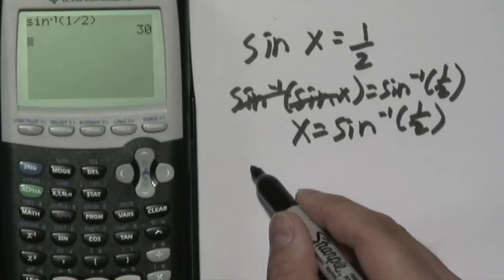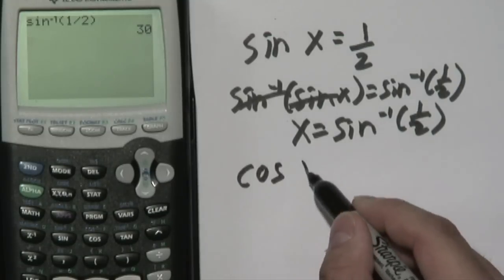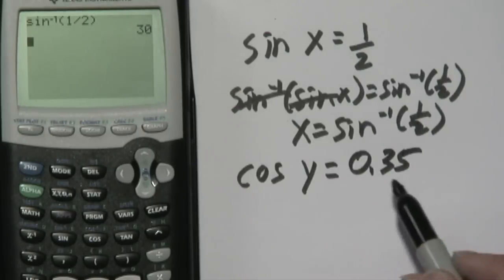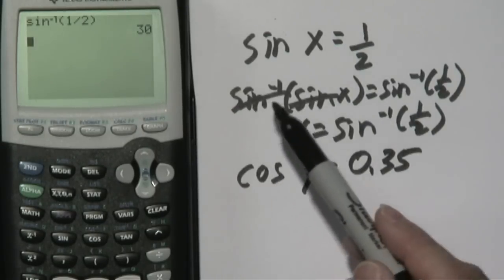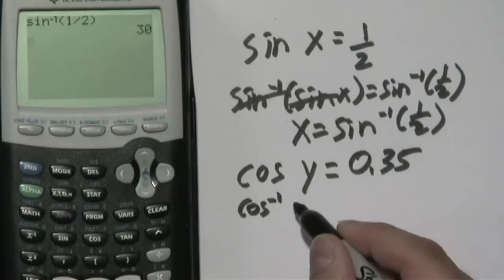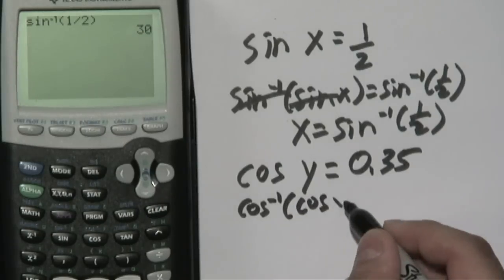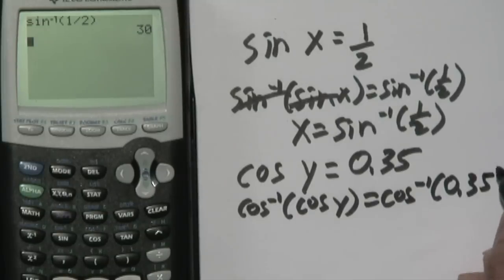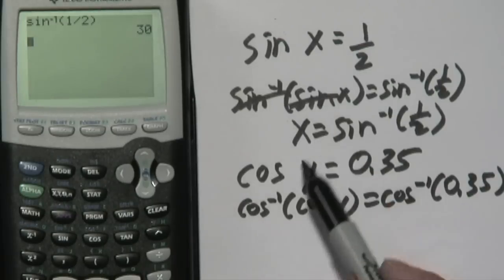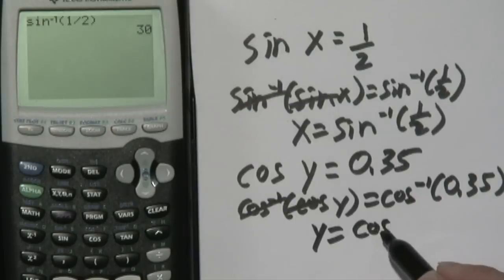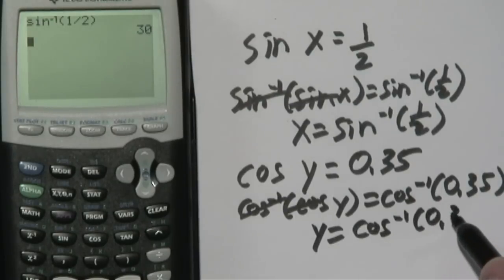Now suppose you want to find out cosine of what degree, let's call this y, is equal to let's just say 0.35. Now you notice we applied sine inverse on both sides so we're going to apply cosine inverse on both sides. Now just like before, if sine inverse and sine will cancel, so will cosine inverse and cosine. So you're going to have y is equal to cosine inverse of 0.35.